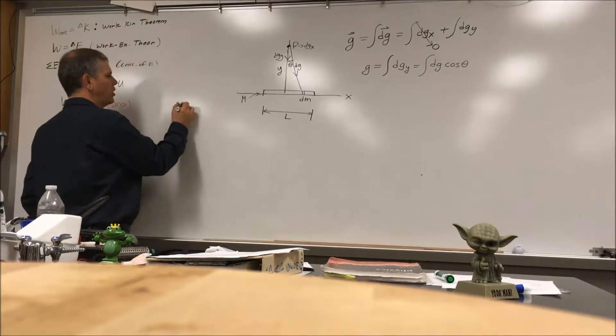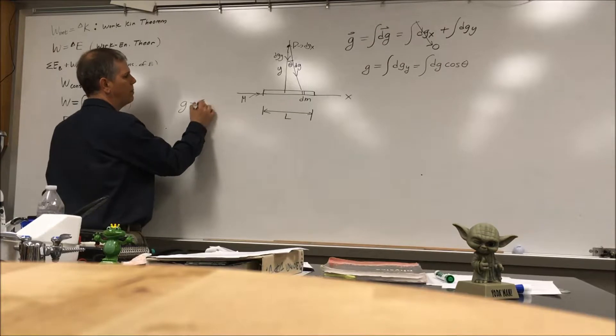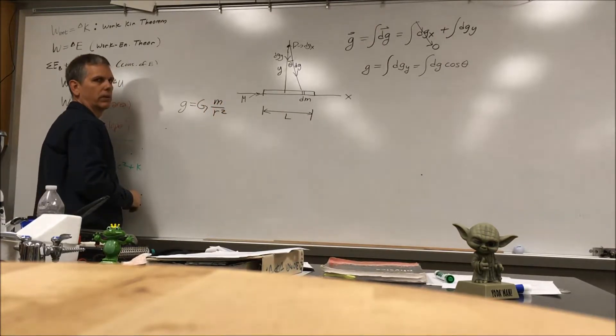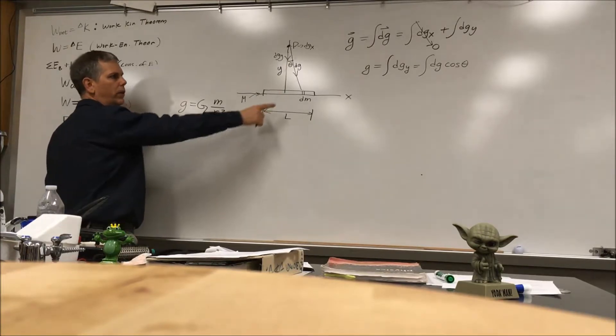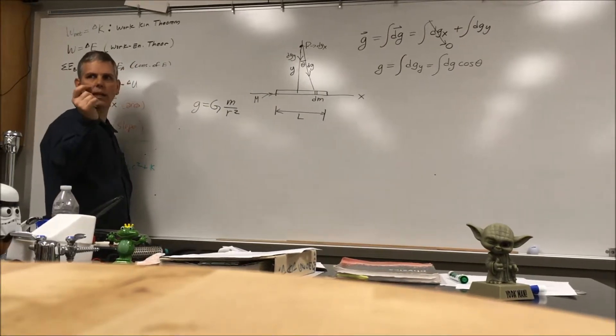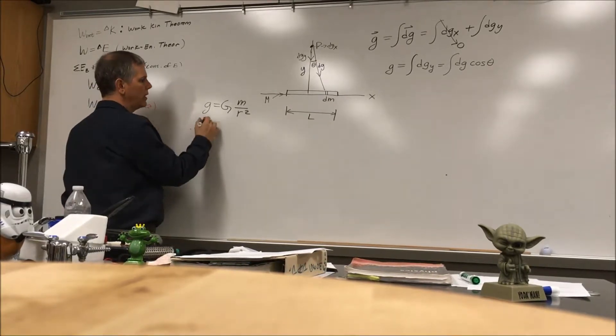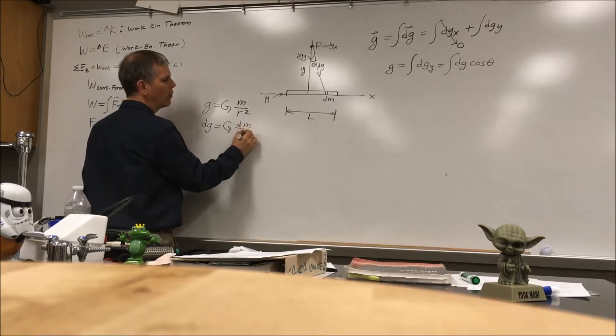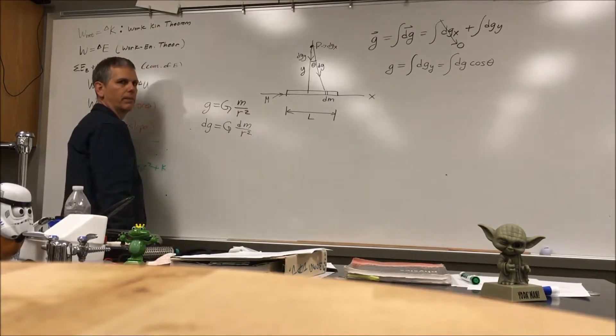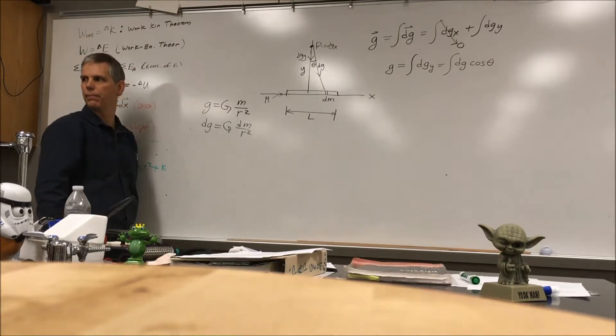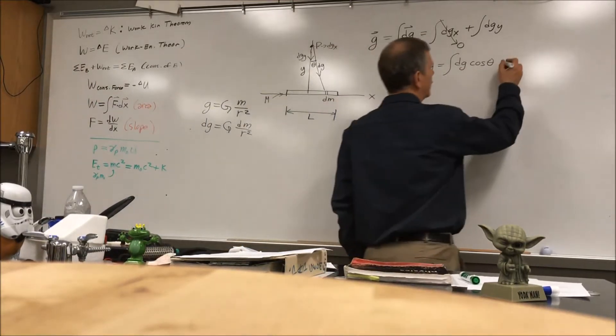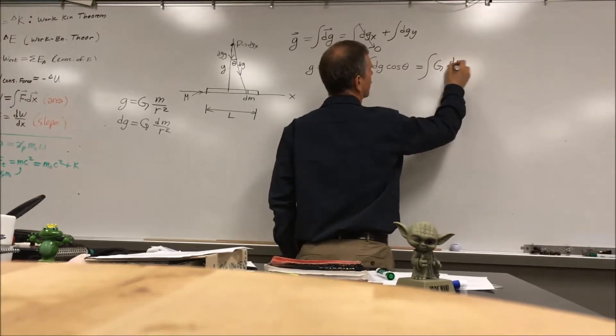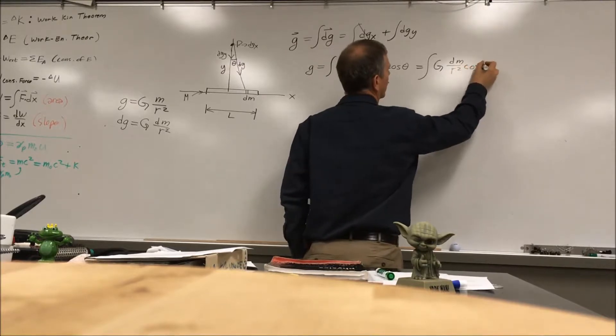Now, if little g equals big G m over r squared, but we're not working with an entire mass, are we? We're working with a little itty bitty mass. So dg is going to equal big G dm over r squared. Do we agree with that? Plug that in.